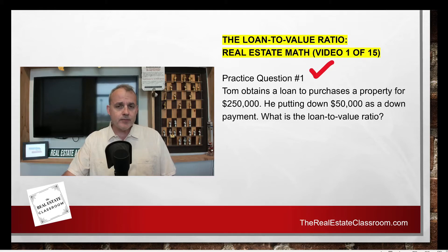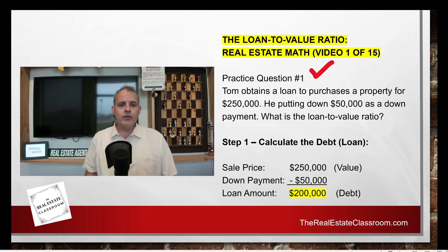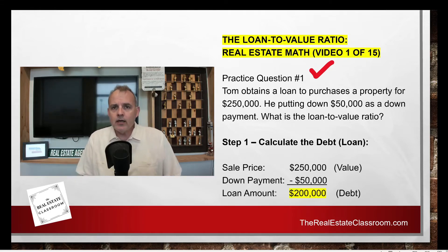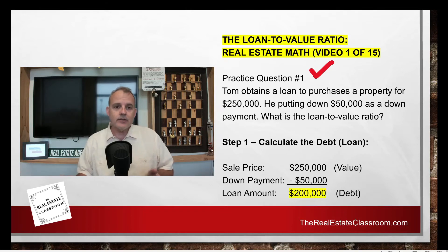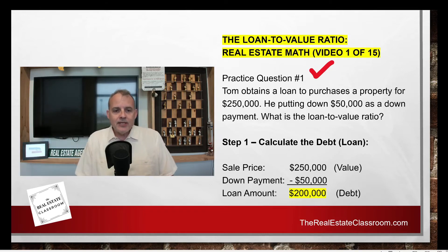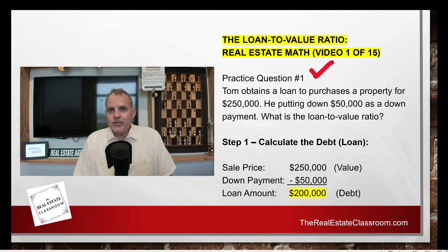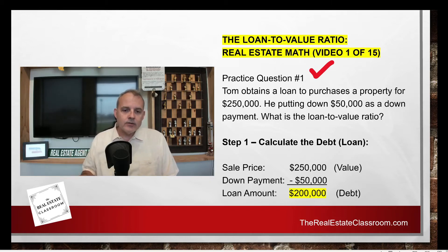There are two steps to this particular type of problem. Number one, we need to calculate what the loan amount is. Remember: loan to value — we've already got the value, which is $250,000, but what's the loan amount? We take the sale price of $250,000 and subtract the down payment of $50,000. That gives us a loan amount of $200,000.